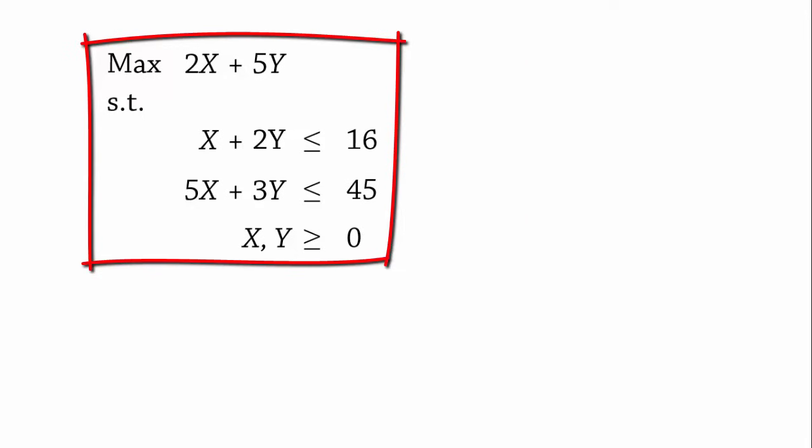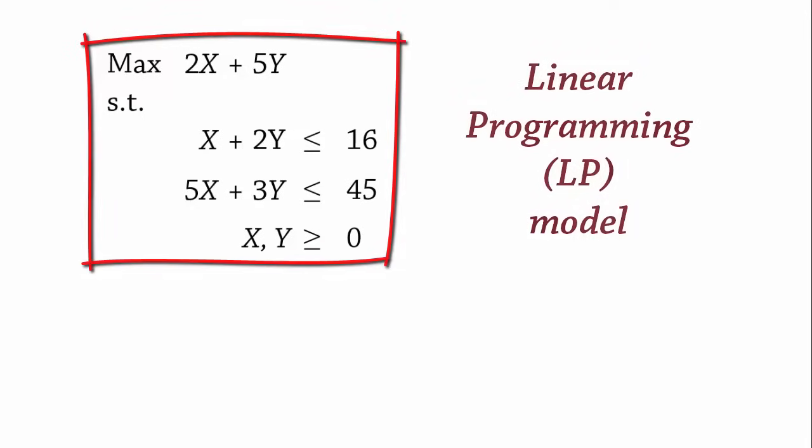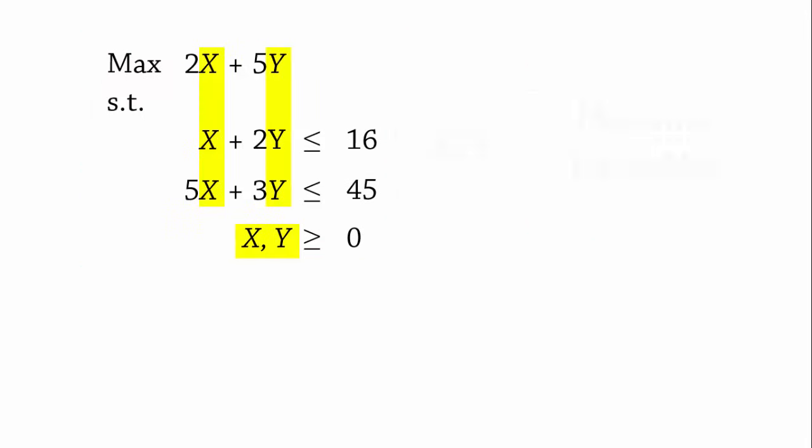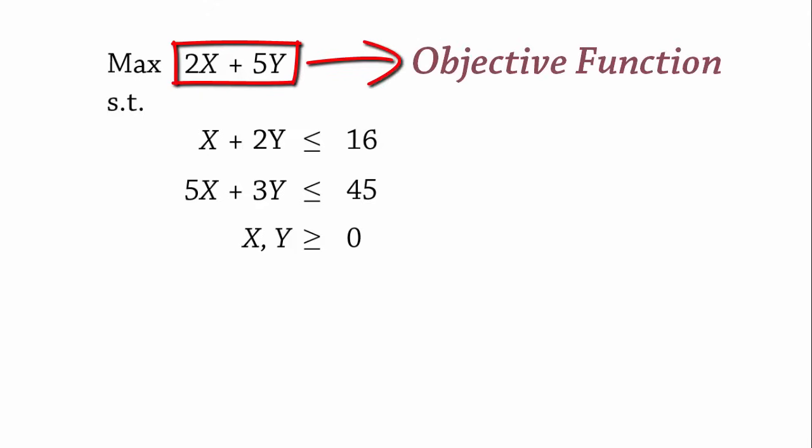What we have here is a linear programming or LP model. The X and Y in this model are referred to as decision variables. They tell us what quantity to buy, produce, sell, or transport, and so on. The 2X plus 5Y here is referred to as the objective function, which we want to maximize.